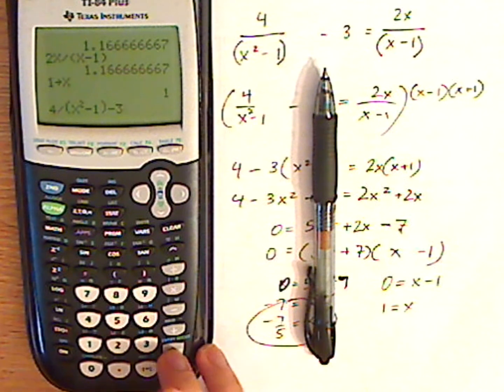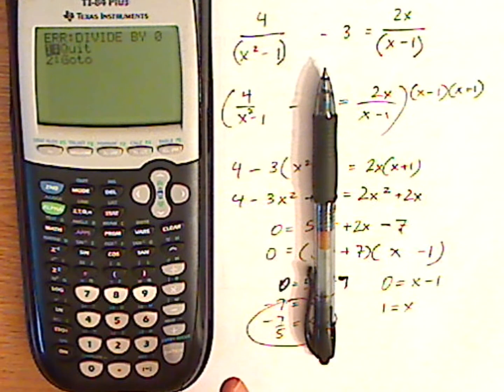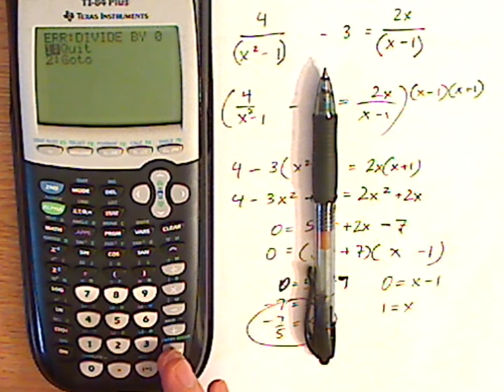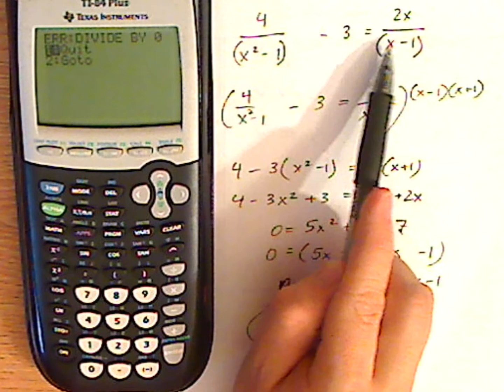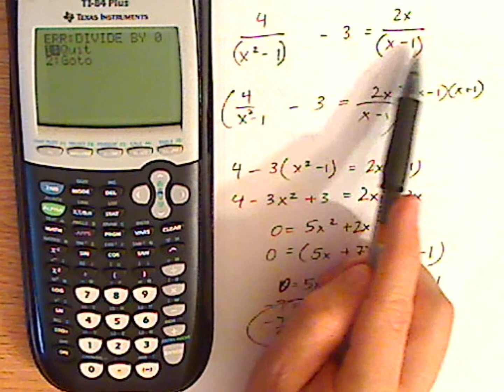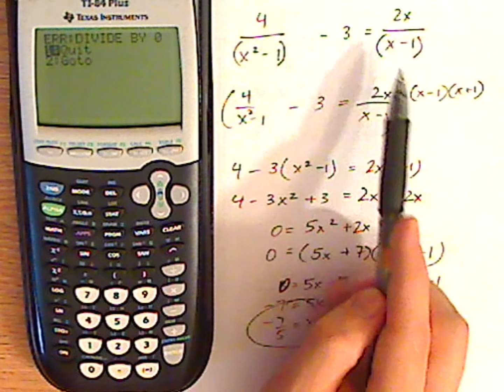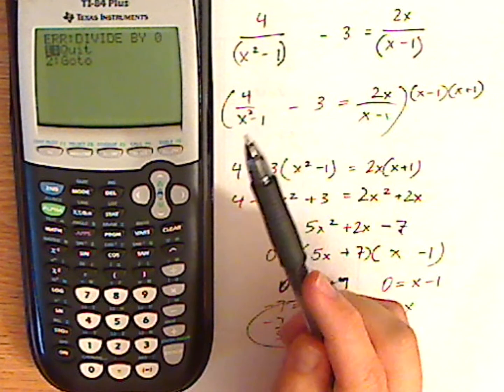Look at that. It's right where you want. Divide by zero. Undefined. And the same thing is going to happen on the other side, because it's going to be one minus one in the denominator, which is zero. And so when you divide by zero, it's going to show up as an error.